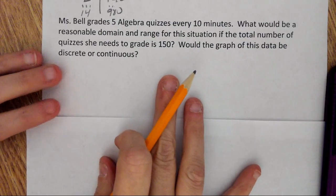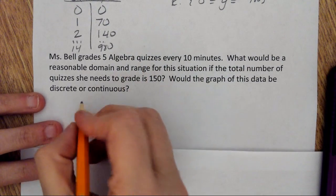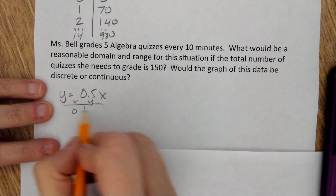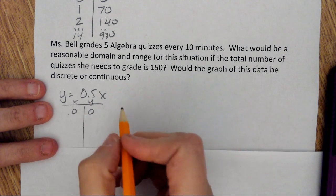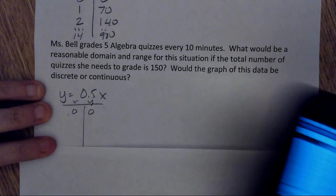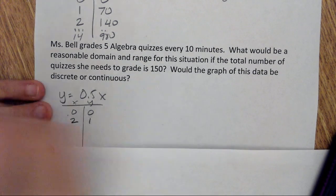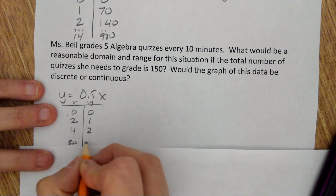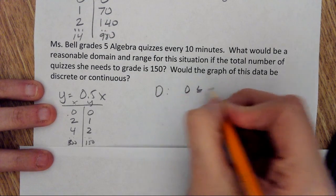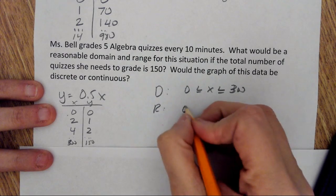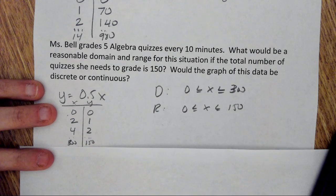This last problem was tricky. Our equation is y equals 0.5x. If I grade zero quizzes it takes zero time. If I grade for one minute I can grade half a quiz, but I can't grade half a quiz — so I need two minutes to get one quiz done, four minutes to get two quizzes done, all the way until 300 minutes to get 150 quizzes done. My domain is 0 to 300 minutes, and my range is 0 to 150 quizzes.